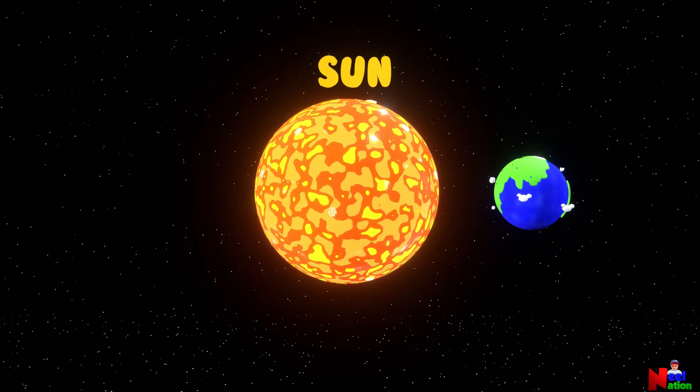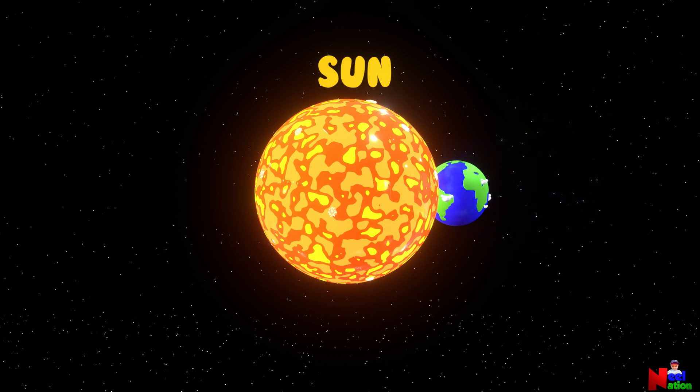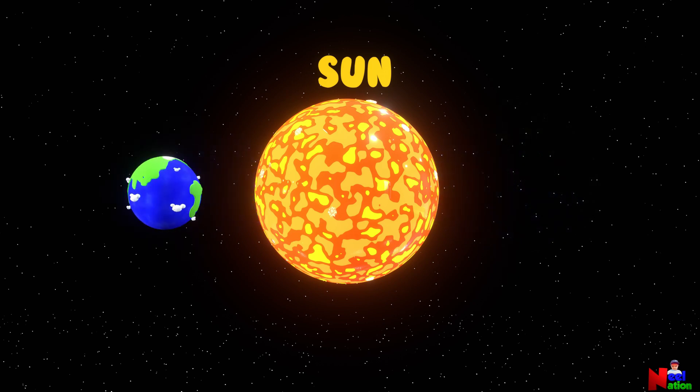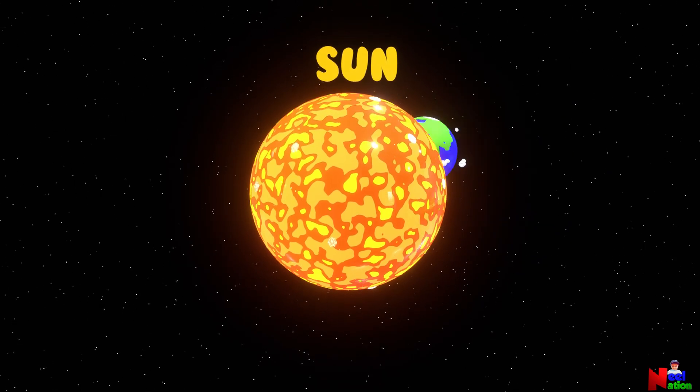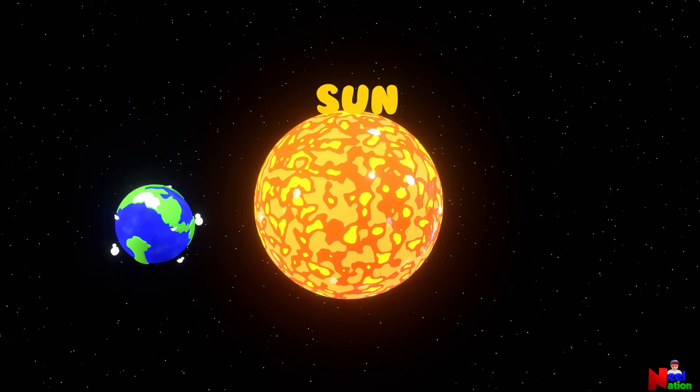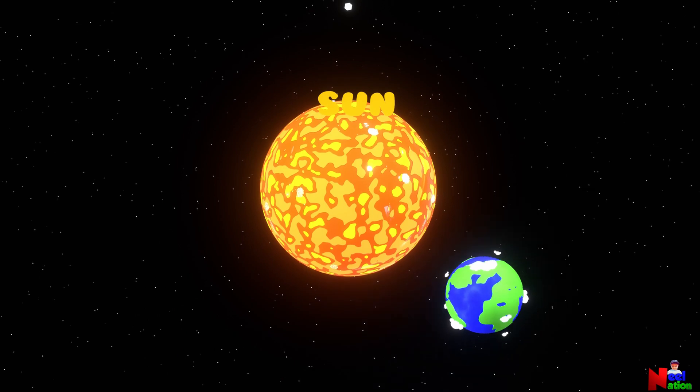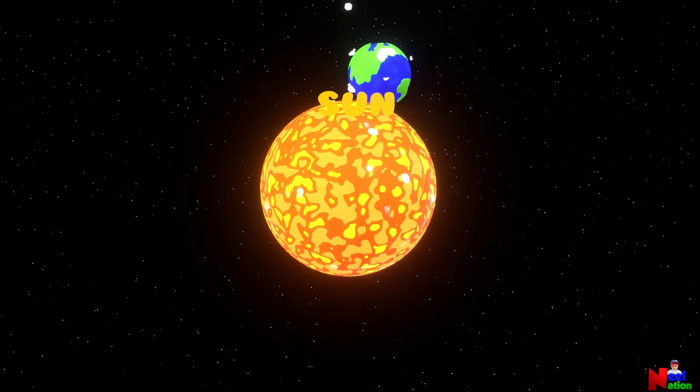The Earth is always spinning and circling around the sun at the same time. Even though it looks like the sun is moving across the sky, it never really moves. It is the Earth that actually moves around the sun.